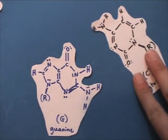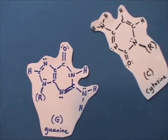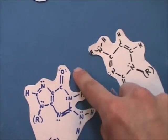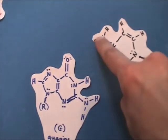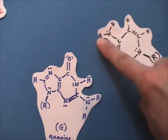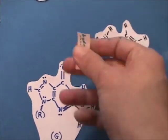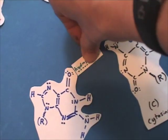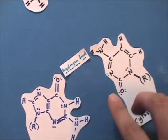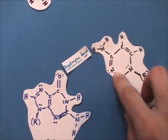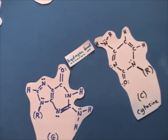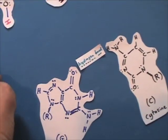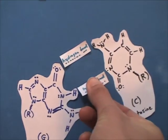This oxygen is partially negative. That hydrogen has a partial positive because that more electronegative nitrogen is pulling its electrons, leaving that hydrogen more positive. Opposites attract. You can form a hydrogen bond right there. And then look at that. It matches up. This negative nitrogen is attracted to that partial positive hydrogen, forming again another hydrogen bond.